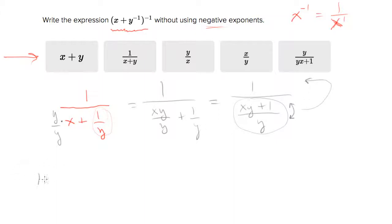So you'll end up with 1 times this fraction flipped upside down. So you'll have y over xy plus 1. So that equals y over xy plus 1, which is this answer choice right here.